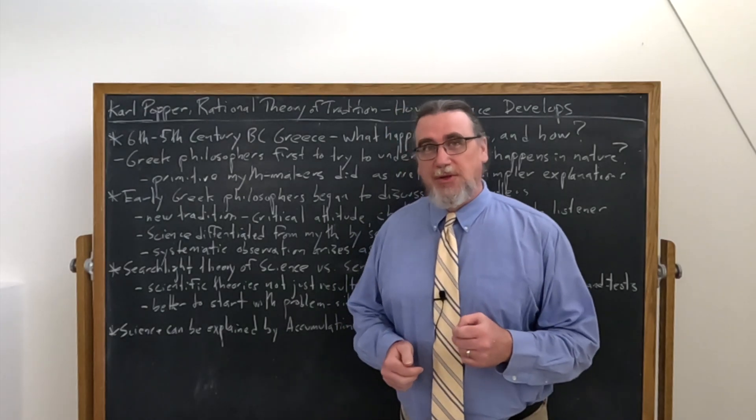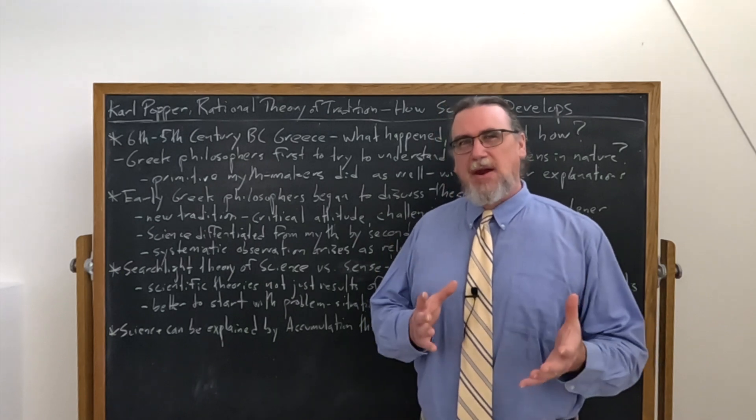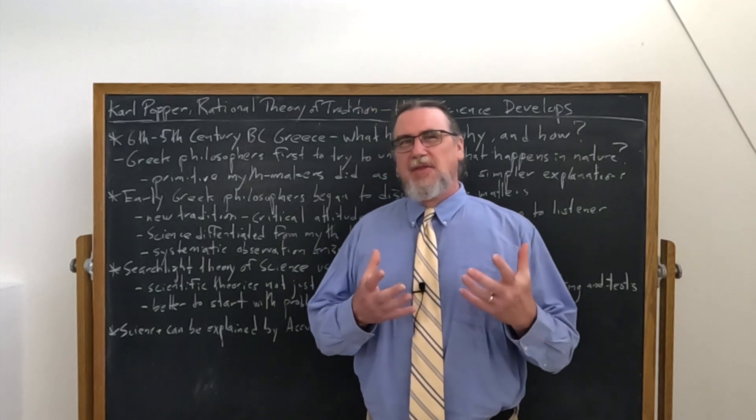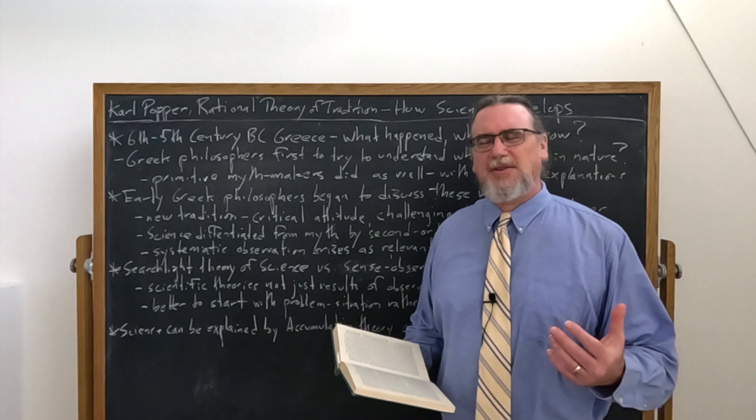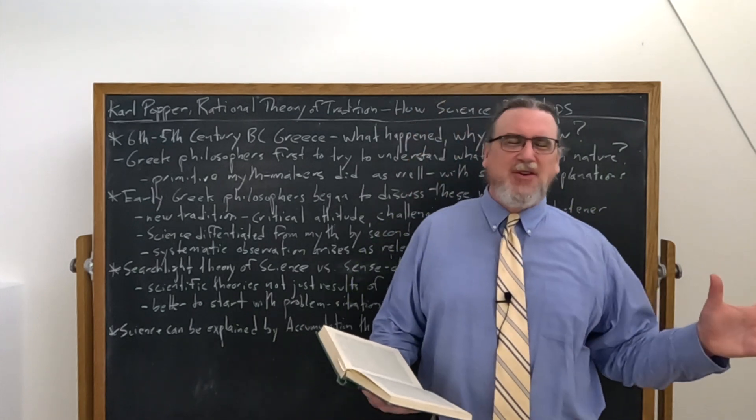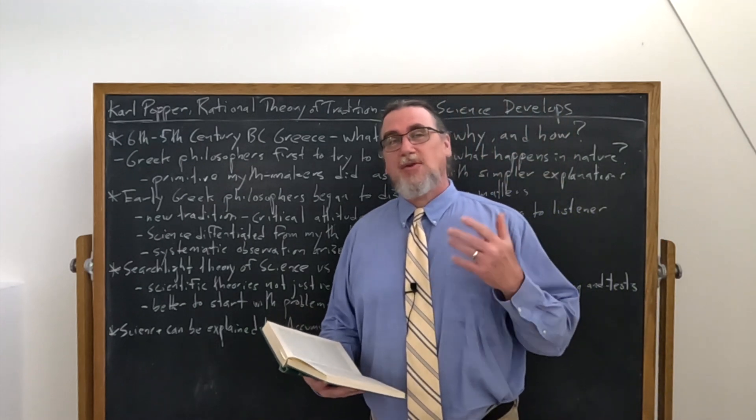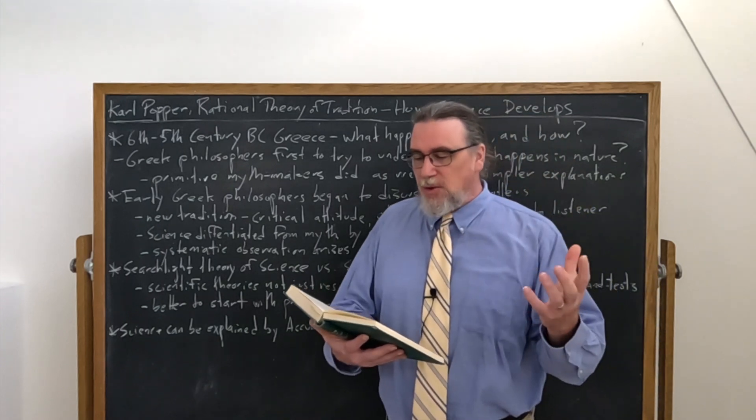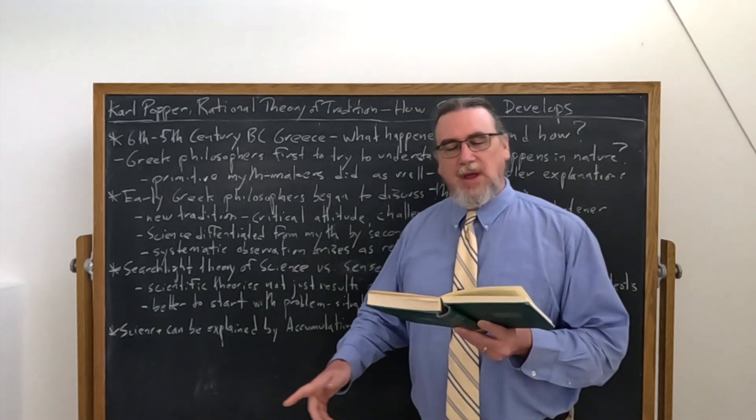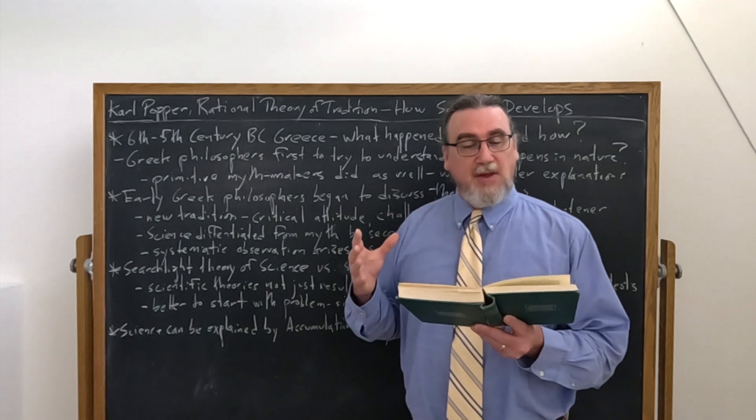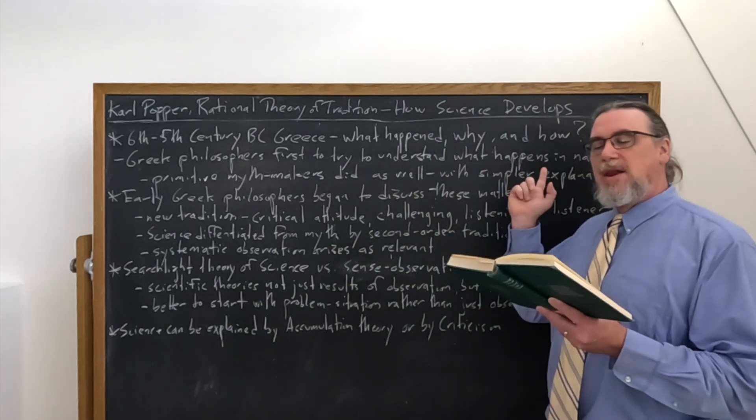In the course of his essay towards a rational theory of tradition, Karl Popper is going to discuss how it is that science, in the sense that we think of it today, managed to arise and become something that is involved with traditions. He wants to make a case that we don't want to simply reject tradition as if it's anti-science. What did actually happen? Why did it happen? And how?